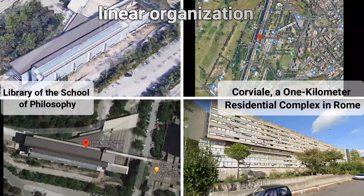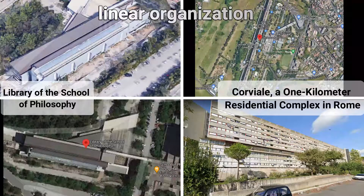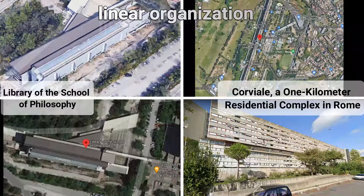If there are spaces that are more important than others, this can be shown by giving the space a bigger size or a different form to make it stand out. Linear organisation is very flexible — it can be straight, curvilinear, or diagonally upslope, to respond to conditions of the site such as topography or to capture sunlight and views.